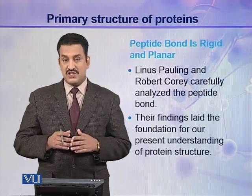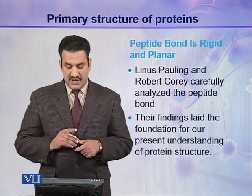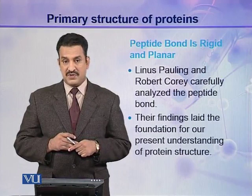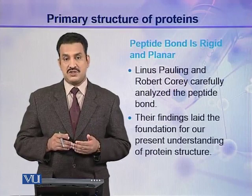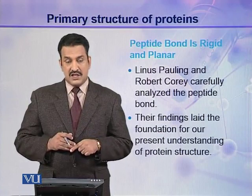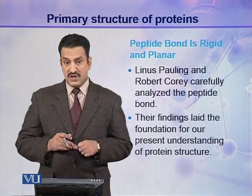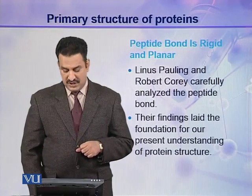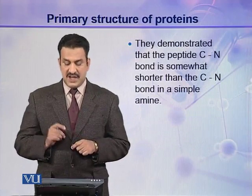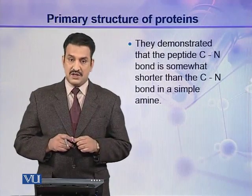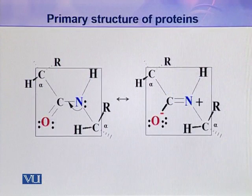The peptide bond is rigid and planar — this was stated by Pauling and Corey. Linus Pauling and Robert Corey carefully analyzed the peptide bonds present in protein molecules. They also knew the importance of hydrogen bonding and other weak interactions present in biomolecules, and they made a number of important conclusions. Their findings laid the foundation of our present understanding of protein structure. They demonstrated that the peptide C-N bond is somewhat shorter than a normal C-N bond present in a simple amine.